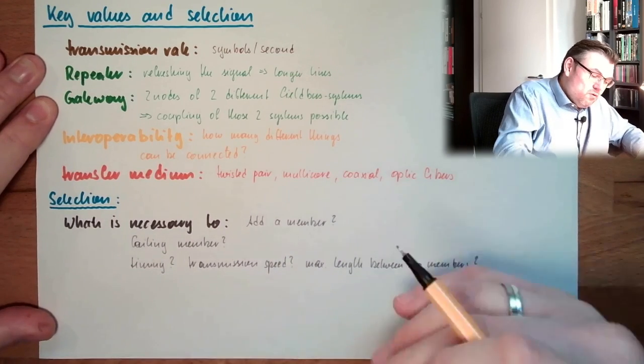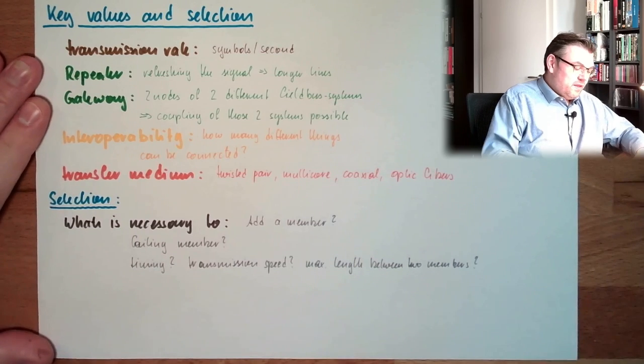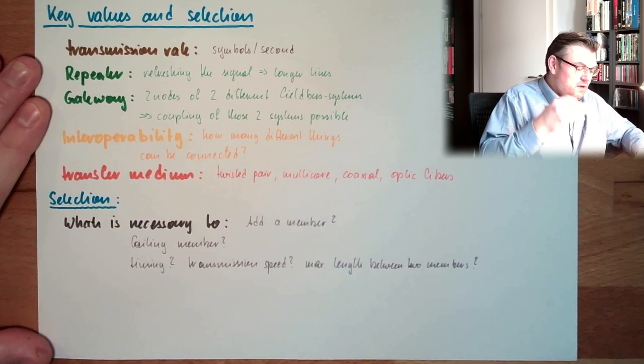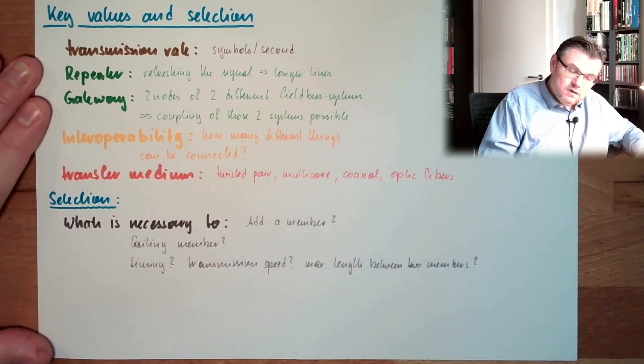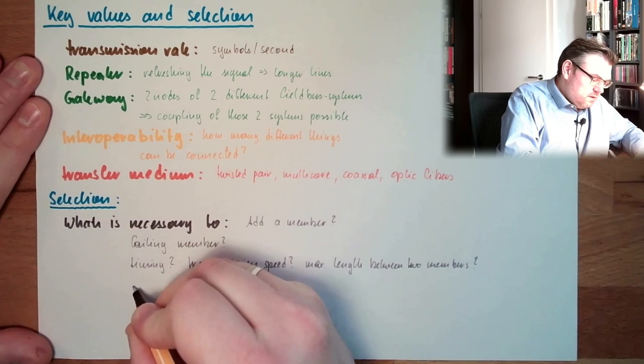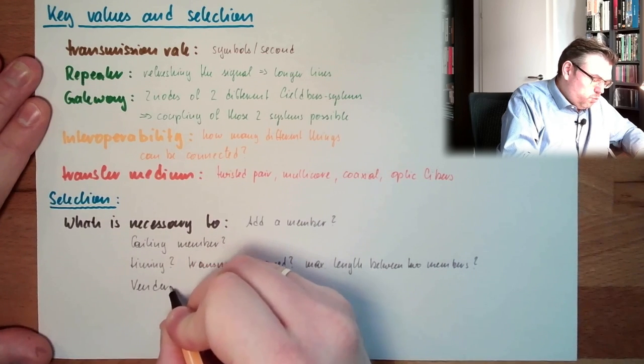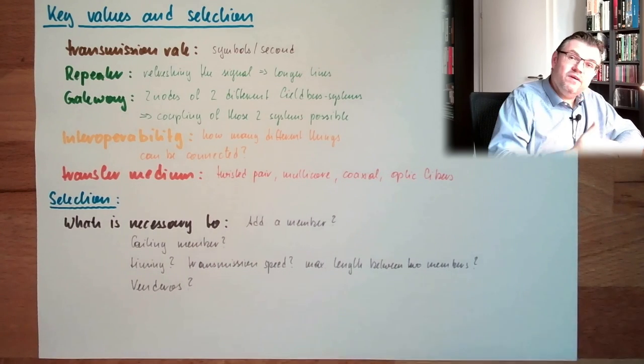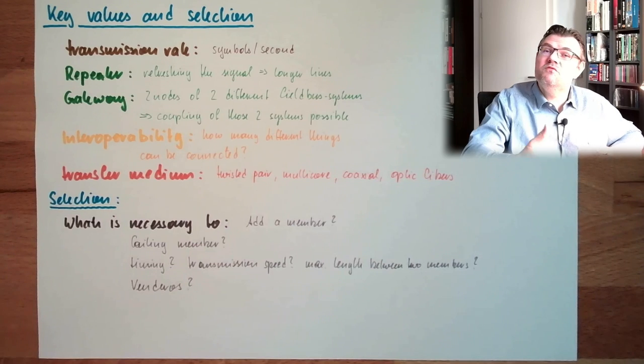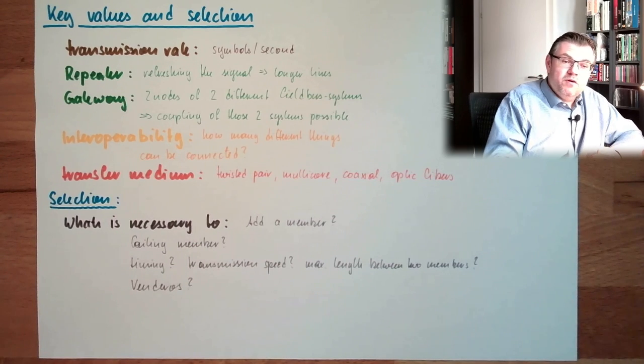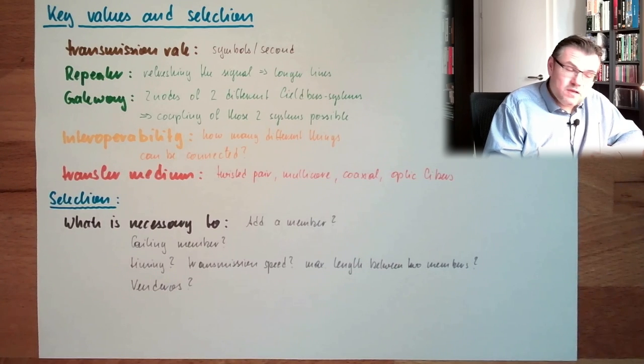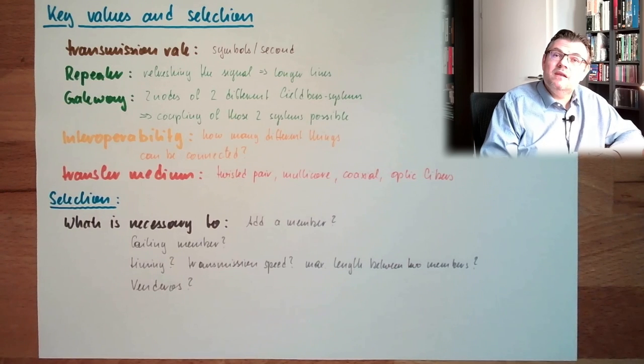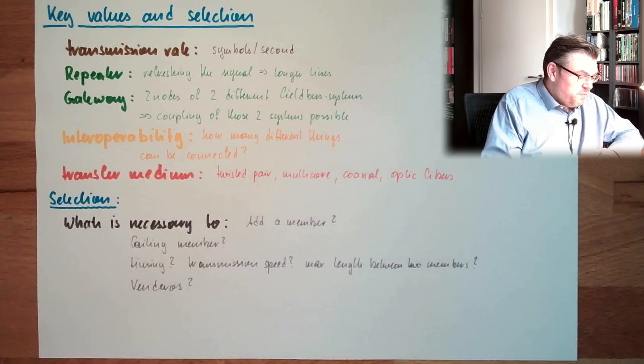This is somehow reflecting those names, timing, transmission speed, maximum length of cables between two members. Are there enough vendors? Can I choose among different companies which manufacture for this fieldbus system or is it the fieldbus system exclusively offered by one company? I have to select, do I want to bring me in this company's dependence or not?